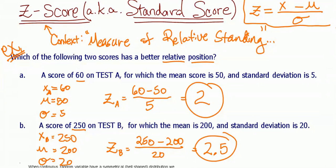So you should have for test A, a score of 2, that's our relative score, and for test B, you would have a relative score of 2.5. So test B is the higher relative score. In other words, you did better on test B than test A.